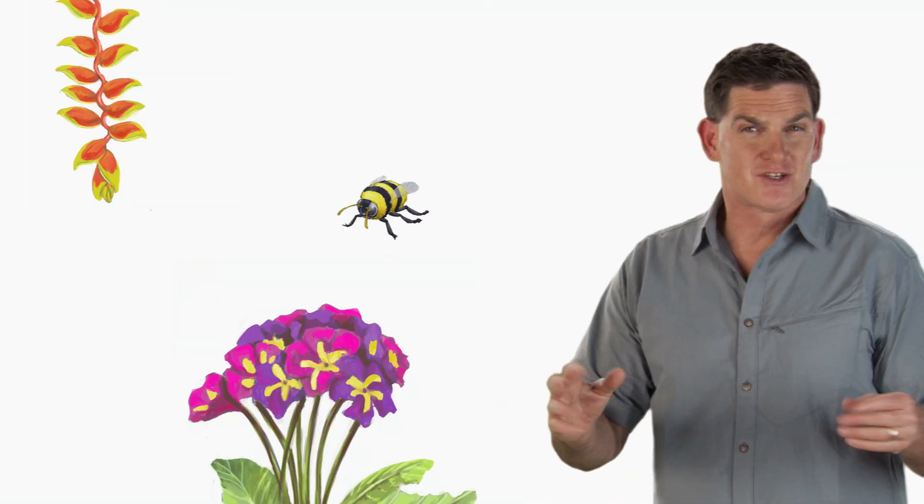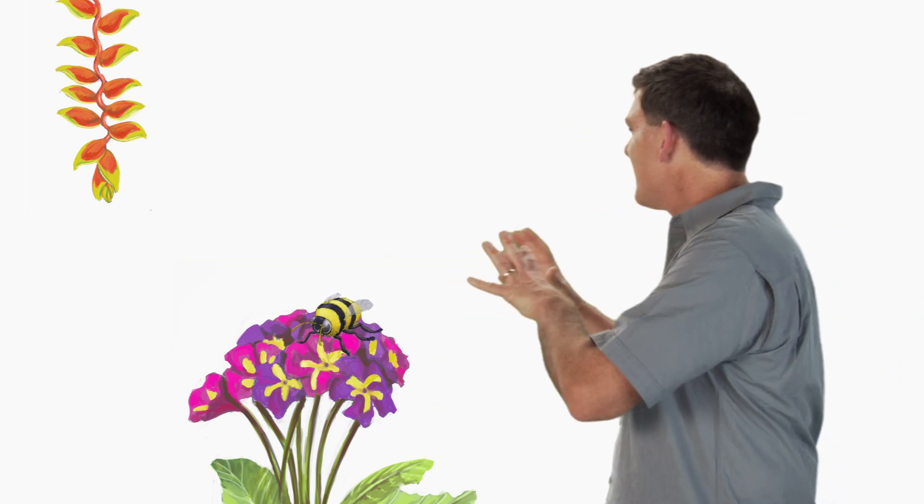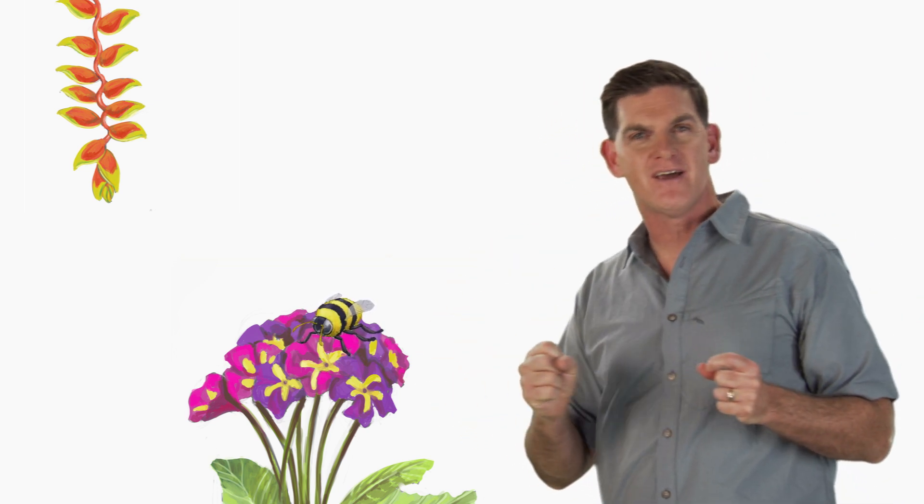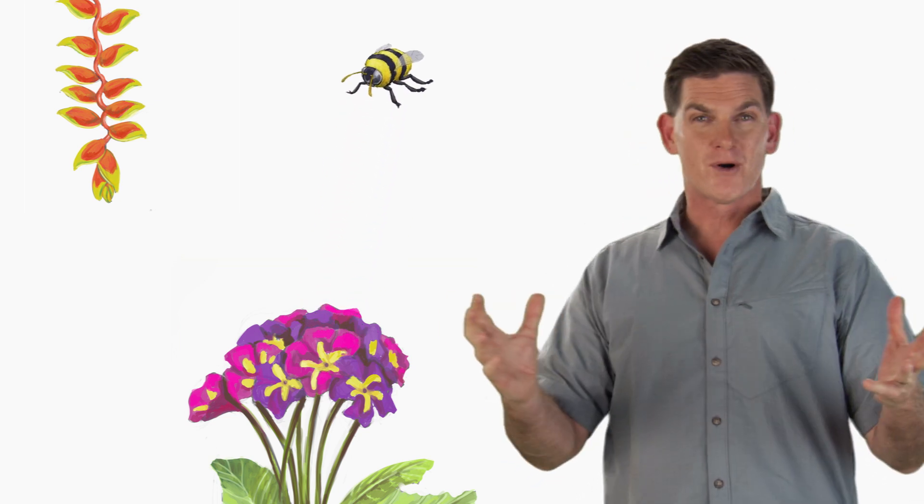When bees land on flowers looking for sweet-tasting nectar, something called pollen inside the flower gets trapped on their legs. The bees carry this pollen to other flowers, which helps the plants make more plants.